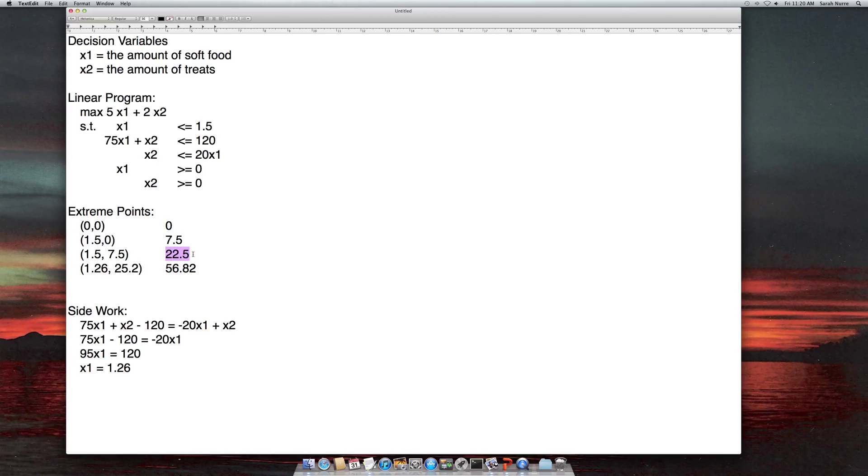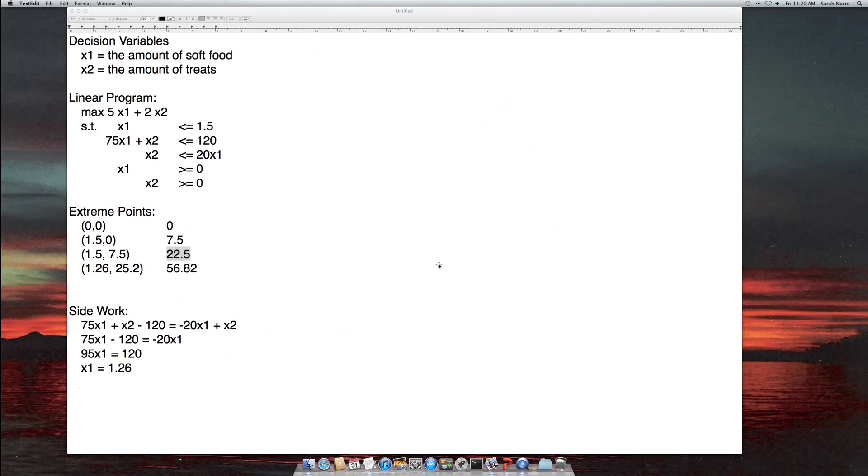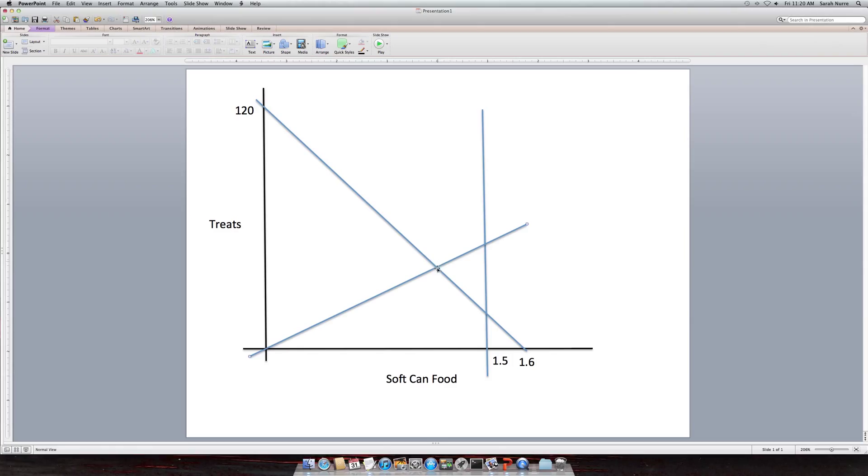So these two points corresponded to this point and this point, and let's say they evaluated to the same objective function value. Then you know that this whole line here is the optimal solution. Therefore, there's multiple optimal solutions along that whole line. We don't have that case and we find that this point right here is what's optimal.